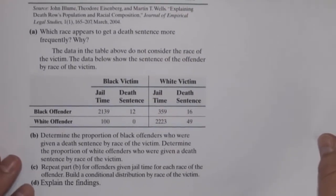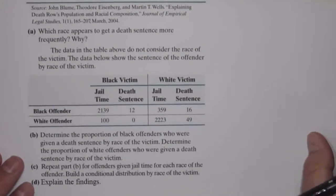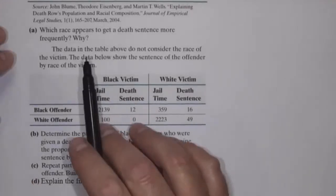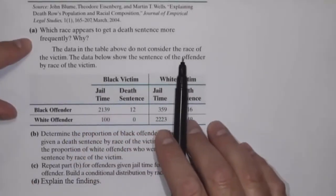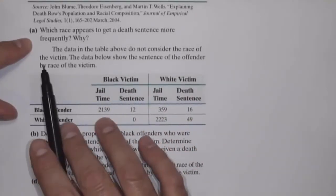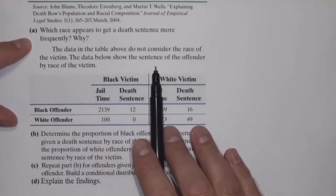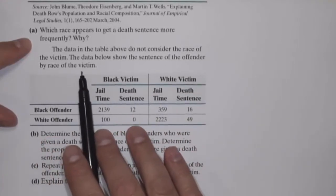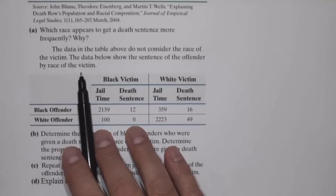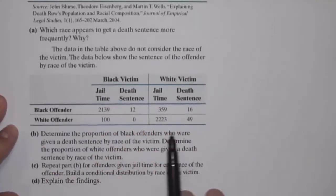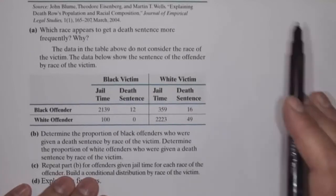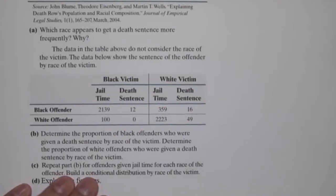But let's look at this a little bit more. The data in the table above do not consider the race of the victim. The data below show the sentence of the offender by race of the victim. In this particular set of data, it's the same basic results, except we're also considering the race of the victim.